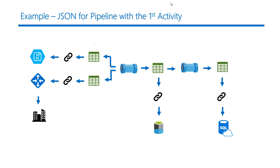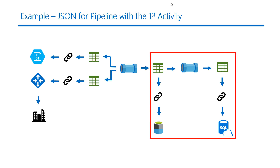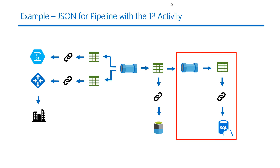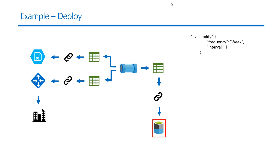So far, we have defined all the components for the first activity. The next activity is a copy activity that takes data from the Data Lake Store and dumps it into a SQL Azure database. As we have already defined the components for the Data Lake Store, we only need to define the components for SQL Azure, which are similar to what we have covered, so I will skip that in this video. Now, deploy the solution within Azure Data Factory. The availability of the input dataset is set to once a day, meaning new data will be available at the respective data stores every day. The availability of the output dataset is set to once a week, and remember this is also the schedule for the pipeline — they both need to be the same.